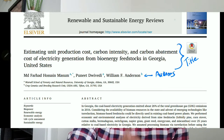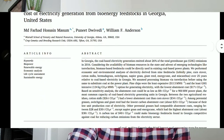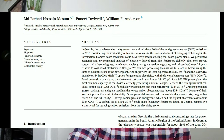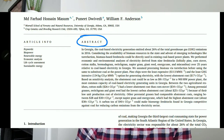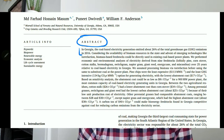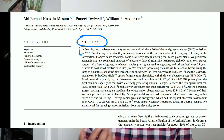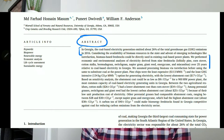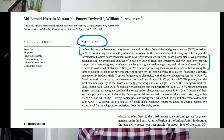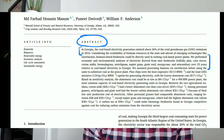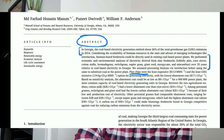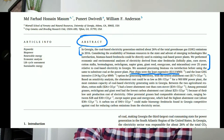Every journal article follows a formula. We start with an abstract, which is a summary of your work. You give maybe one line explaining why this study was important, then describe what you did, where you did it, and maybe one line about how you did it. Obviously one line is not enough detail, but this is a summary.